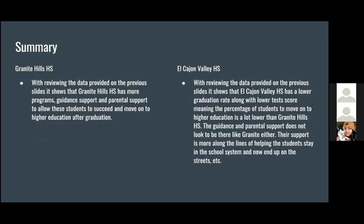In summary and conclusion, the data shows that more programs, more guidance, support, and parental involvement allow students at Granite Hills to be more successful and move on to higher education. El Cajon High School has a lower graduation rate and lower test scores, so the percentage of students moving on to higher education is much lower, and the level of guidance and parental support does not match what Granite Hills provides — both in terms of what the school offers students and the parental involvement in supporting them. Those are the two schools we compared, and thank you.